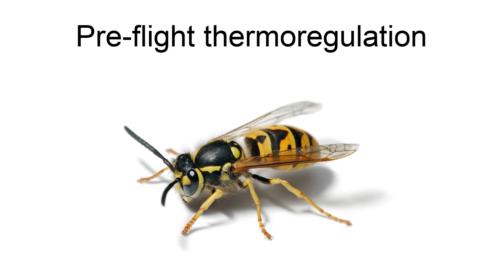Achieving elevated temperatures falls under the term physiological thermoregulation because heat is generated by a physiological process inside the insect. The other described way of thermoregulation is called behavioral thermoregulation because body temperature is controlled by behavioral means, such as basking in the sun. Butterflies are a good example of insects that are heliotherms, deriving heat almost exclusively from the sun.